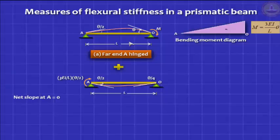And by the definition of stiffness, the moment we need to apply will be 3EI by L times the rotation theta by 2. And as a result of this, I get another end O, which will be half of theta by 2, and that is theta by 4.